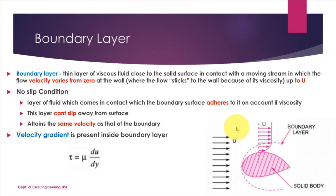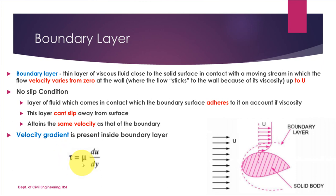Outside the boundary layer we have the free stream velocity, and inside the boundary layer the velocity increases from zero to U. From the previous module, shear stress τ = μ(du/dy), where du/dy is the velocity gradient. Wherever a velocity gradient exists, shear stress also exists. So inside the boundary layer we can find shear stress using this equation, where μ is the coefficient of viscosity.